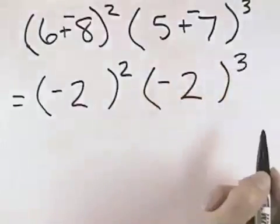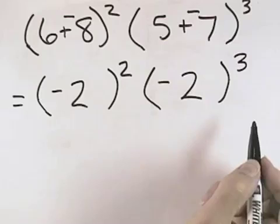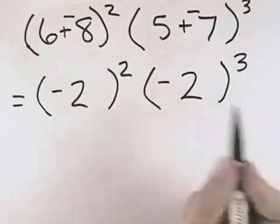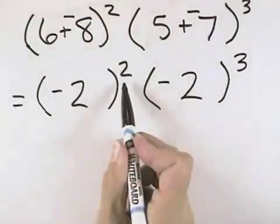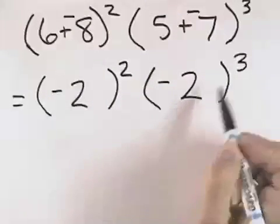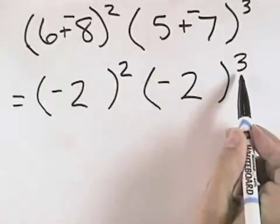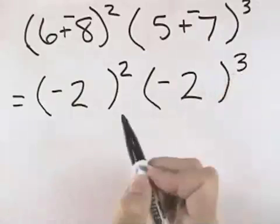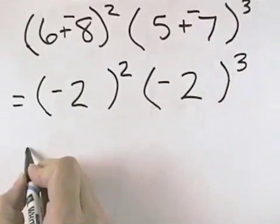And then we'll be ready to raise it to the third power. At this point, we have different choices. We could take the negative 2 and square it, raising it to the exponent of 2, and take the negative 2 and cube it, raising it to the exponent of 3. If we do that, then we'll finish with the multiplication between those two results.